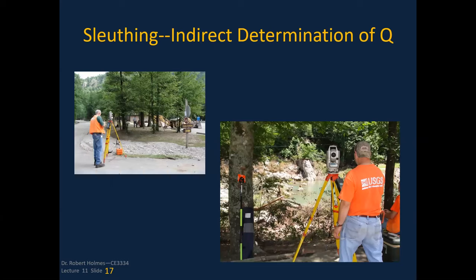We brought down two survey crews — one out of Russellville and one out of Fayetteville, Arkansas, and another from Little Rock — and began surveys in the campground area. We set up surveying teams to get channel geometry from cross sections and to survey in the high watermarks, with the goal of determining the peak discharge value.